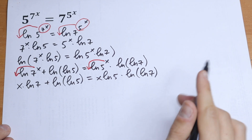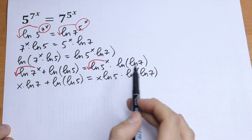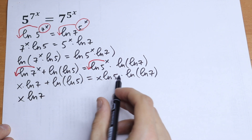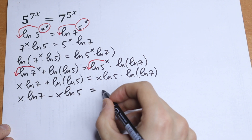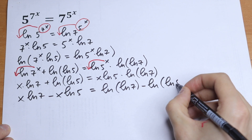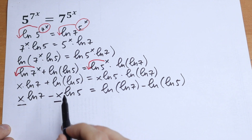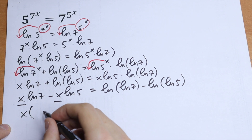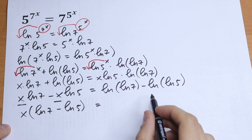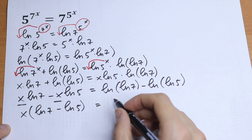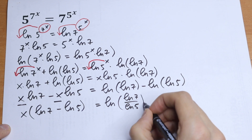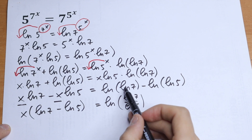What are we going to do next? We need our x's on the left and our numbers on the right. So let's bring the x terms to the left and the constants to the right. We will have x times natural log 7 minus x times natural log 5 equal to natural log of natural log 7 minus natural log of natural log 5. We can factor out x as common, so we have x times (natural log 7 minus natural log 5) equal to, which we can write as a fraction: natural log of natural log 7 over natural log 5.